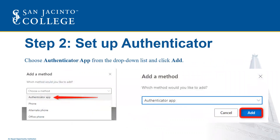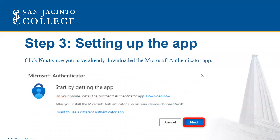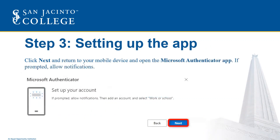Choose Authenticator app from the drop-down list and click Add. Click Next, since you have already downloaded the Microsoft Authenticator app. Click Next again and return to your Android and open the Microsoft Authenticator app.